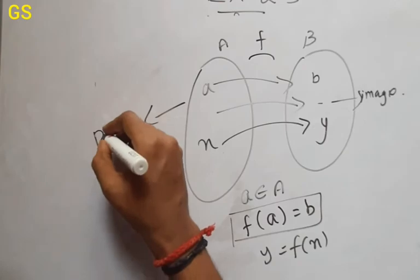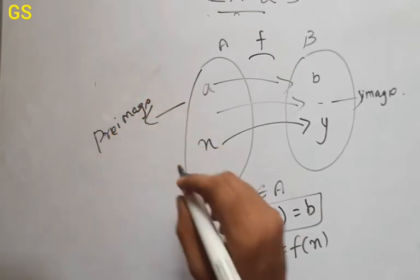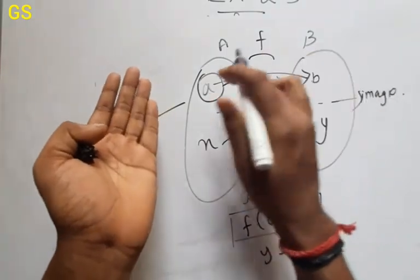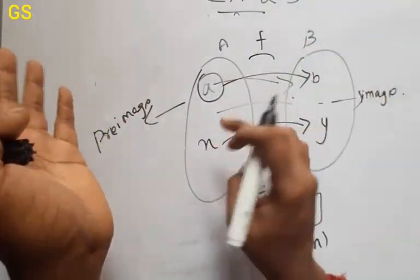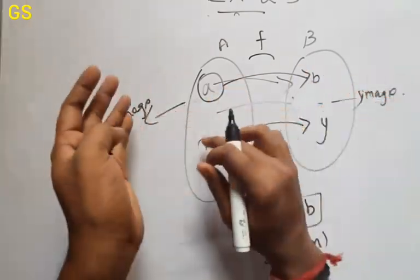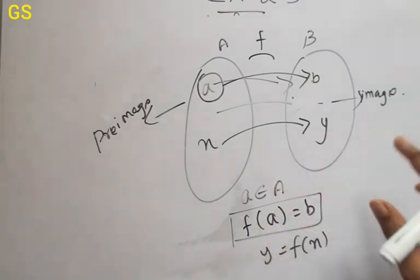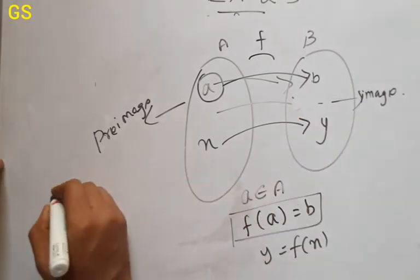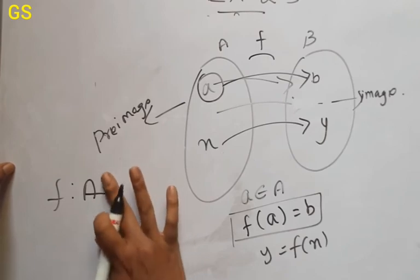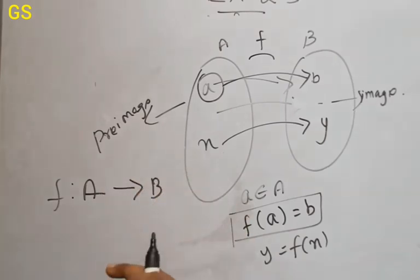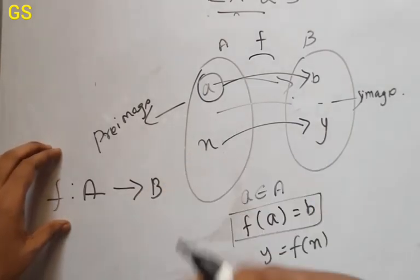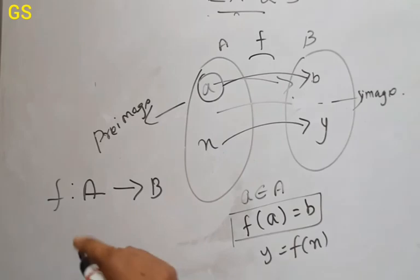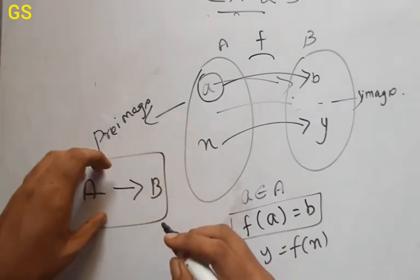Now the elements here are called pre-images. The pre-image of y is x. So here we have the image and the pre-image — y is the image of x, and x is the pre-image of y. Let's denote the function from A to B. F is a function from A to B, where elements of A are mapped to elements of B.